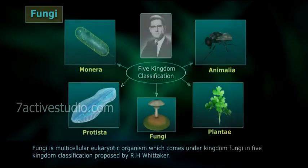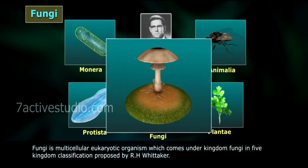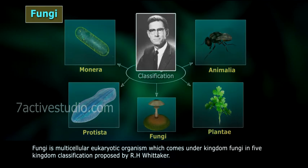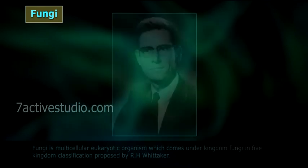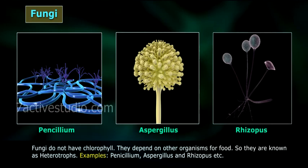Fungi. Fungi is a multicellular eukaryotic organism which comes under kingdom fungi in the five kingdom classification proposed by R.H. Whittaker. Fungi do not have chlorophyll. They depend on other organisms for food, so they are known as heterotrophs.